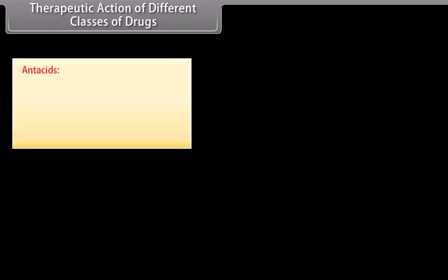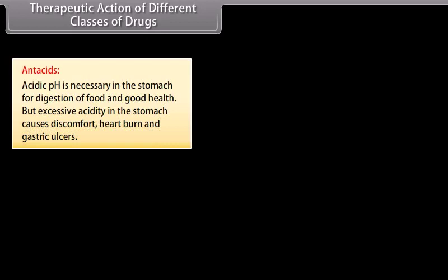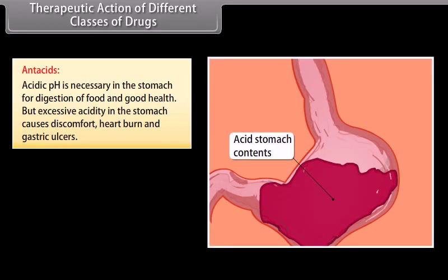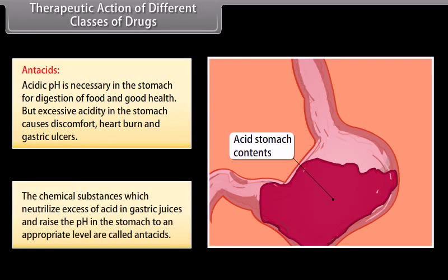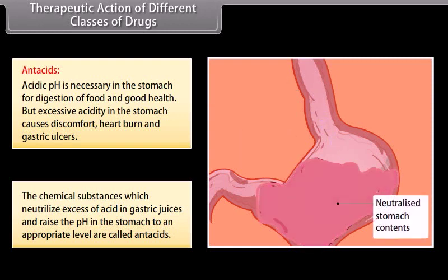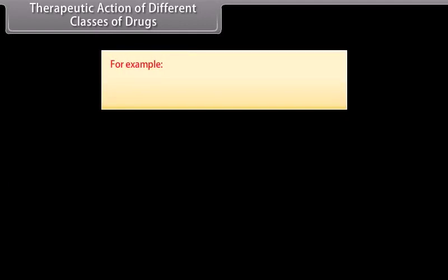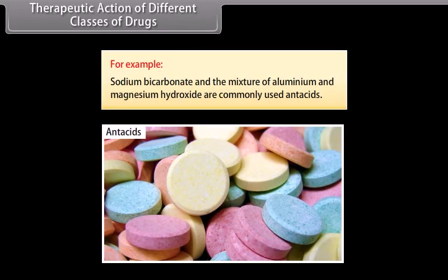Therapeutic action of different classes of drugs. Antacids: acidic pH is necessary in the stomach for digestion of food and good health, but excessive acidity causes discomfort, heartburn, and gastric ulcers. The chemical substances which neutralize excess acid in gastric juices and raise the pH in the stomach to an appropriate level are called antacids. For example, sodium bicarbonate and the mixture of aluminium and magnesium hydroxide are commonly used antacids.